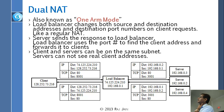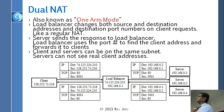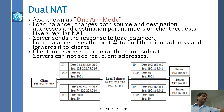The load balancer changes both the source and destination addresses and the destination port numbers on the client request, like a regular NAT. Actually, this is a writing problem — it changes both the source IP and source port and destination address, not the destination port. That's actually a typo.